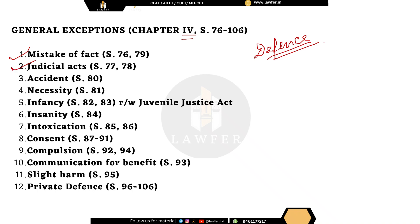Second, judicial acts: if a judge did anything while acting judicially or giving judgement, he will not be guilty; similarly for acts done in furtherance of a judgement. Third, accident during lawful activities: if while doing any lawful activity an accident occurs, that person will not be guilty. Fourth, necessity: if somebody did any act because it was necessary to prevent greater harm, that act is also not guilty, provided it was necessary to prevent greater harm.